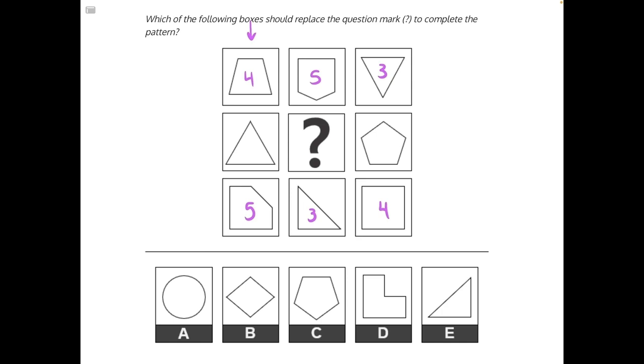If we look at our first column, we have four sides, five sides, and three sides. In our third column, we have three, four, and five.